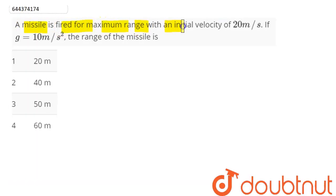If value of g is 10 meters per second square, the range of the missile is. So we can see here, range of a projectile is given here.